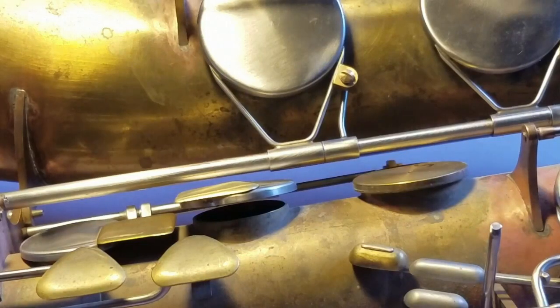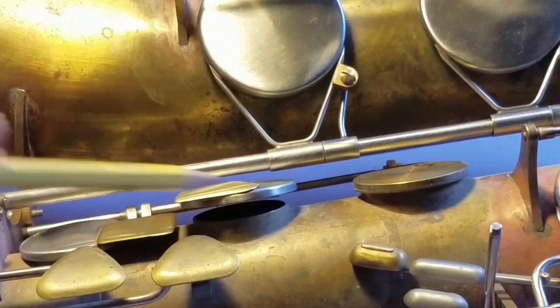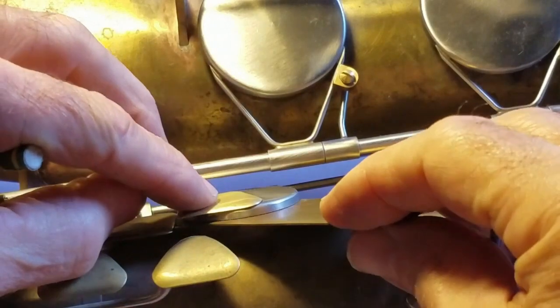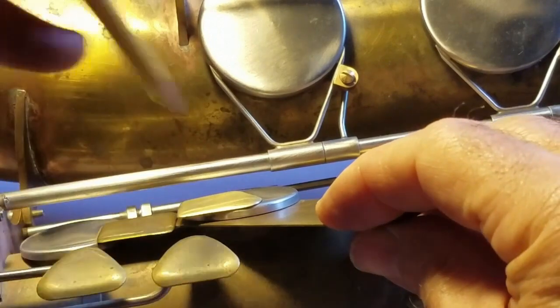You also want to check the cup alignment with the tone hole. A good way to do that is with a piece of flat 1/32 inch thick sheet metal and check the fit.